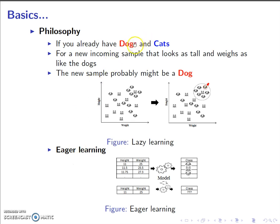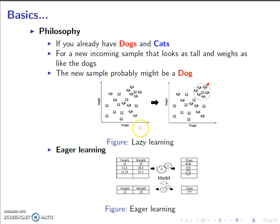Let's get started. Assume we are given a scenario in which we have two classes of animals — cats and dogs — and we are also given their respective heights and weights. In machine learning terms, this information is called a training set. For each of these instances of heights and weights, we form a scatter plot, shown on the left, and for each point we assign the respective class — cat or dog.